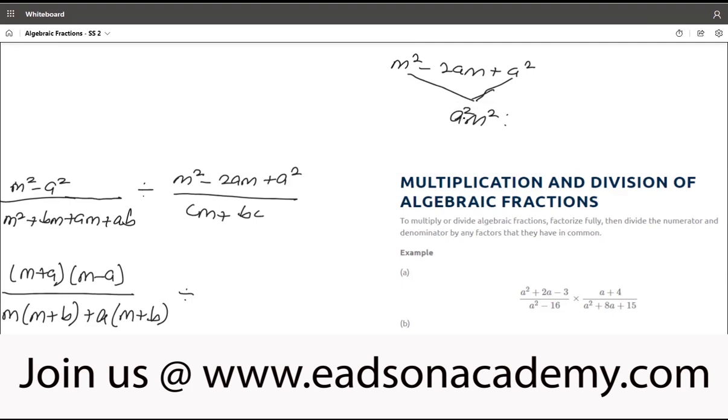Now, two factors of a square m square that can add up to 2am would be—this is like saying 1 a square m square. And factors of 1 is 1. So this would be am and am. But we are looking for negative 2am. So how do we add am and am to get negative 2am? Both of them have to be negative: negative am, negative am. So that negative am plus negative am is negative 2am.